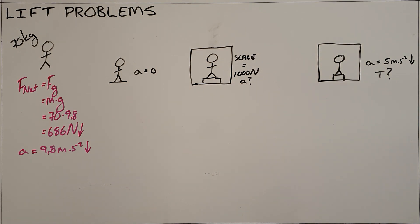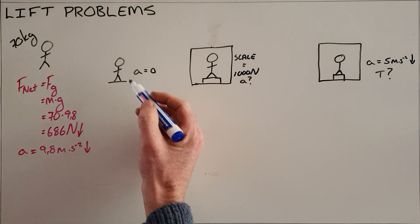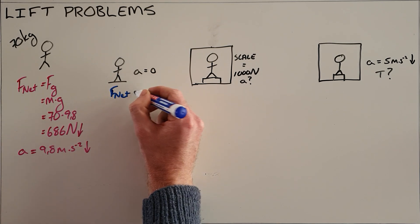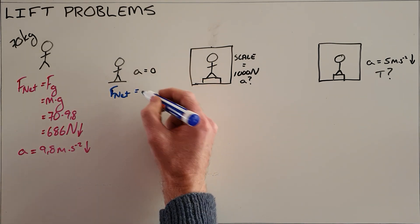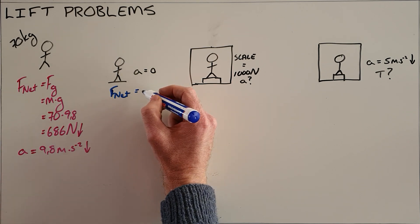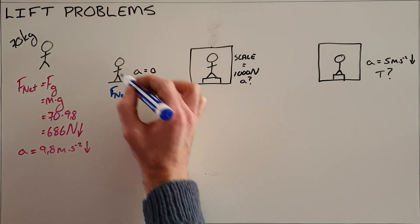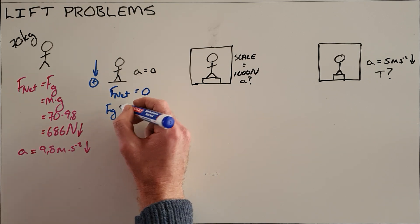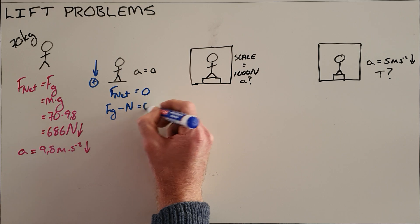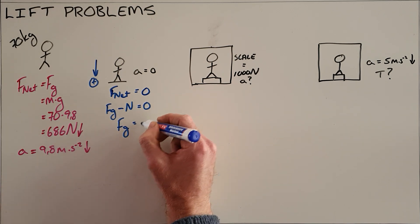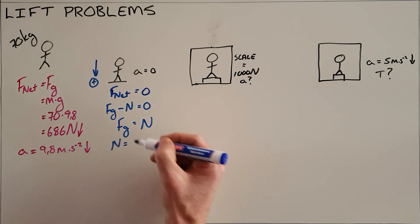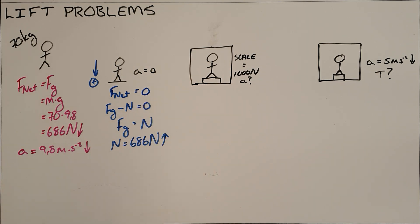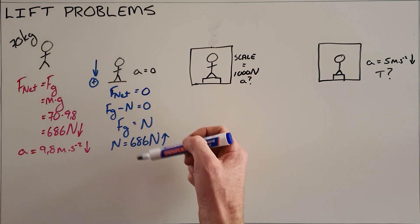We now look at the same man standing on the ground where his acceleration is zero. Newton's first and second law tell us that if acceleration is zero, the net force must be zero. Choosing downward as positive, the force of gravity pulling him down minus the normal force pushing him up equals zero. Therefore, the normal force equals 686 Newtons upward, which explains why he is neither sinking into the ground nor lifting off.